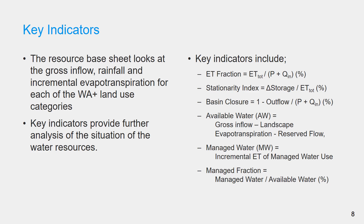The first set of indicators focuses on the fraction or percentage of evapotranspiration, storage, and outflow with respect to total inflow. The first key indicator is ET fraction, given by the ratio of total evapotranspiration to total inflow. ET fraction indicates which portion of the total inflow is consumed and which part is converted into renewable resources. A value higher than 100 percent indicates over-exploitation or dependency on external resources.